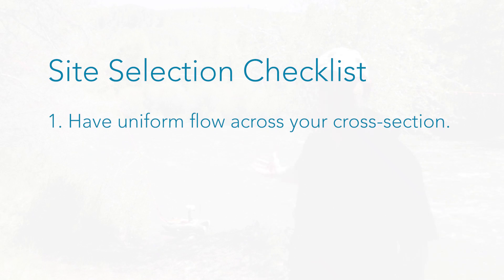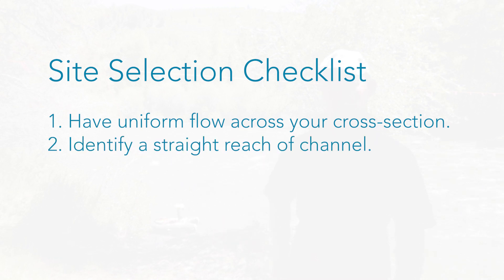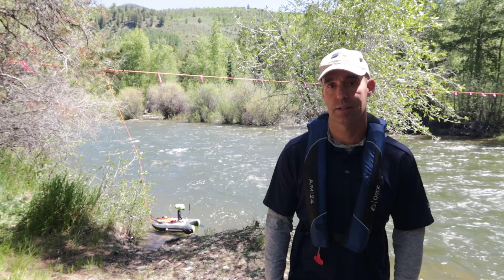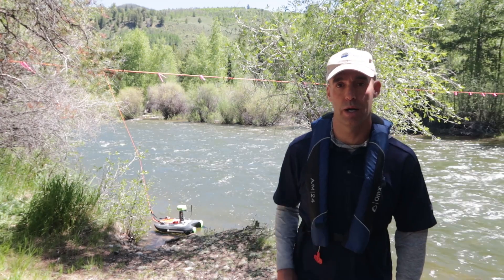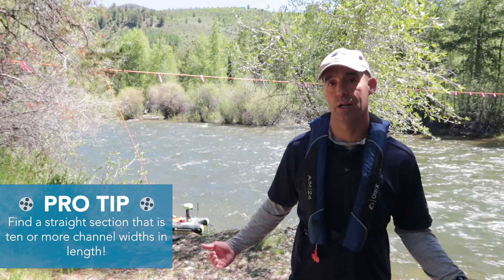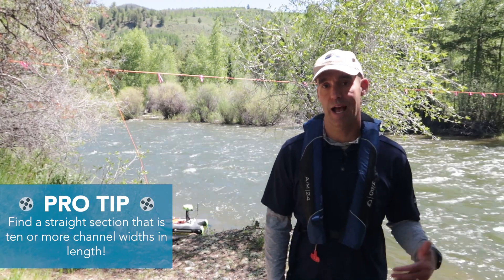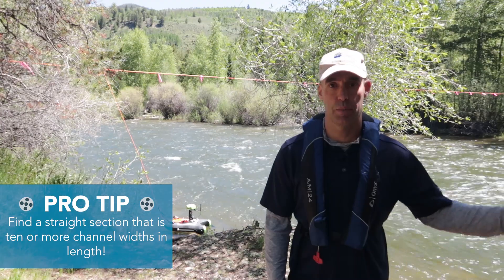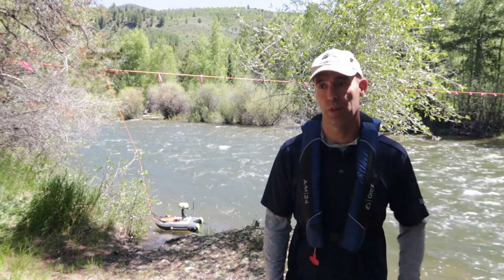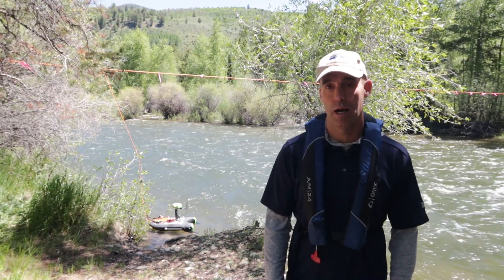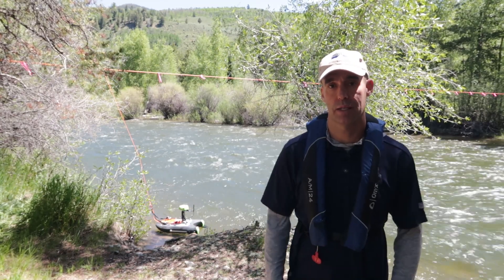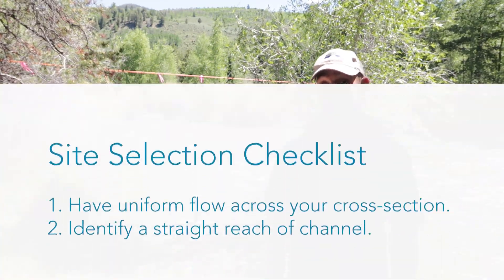Number one, you want to make sure that you have uniform flow across your cross section — you don't want eddies or pools or those kinds of things. You want a straight reach of channel with all of the water confined to a single channel and a more or less uniform cross section, so you don't want wide shallow areas. That straight reach of channel should be about 10 channel widths long, and you shouldn't have any control structures or bends upstream or downstream within about 5 channel widths, because we want uniform flow across the cross section.